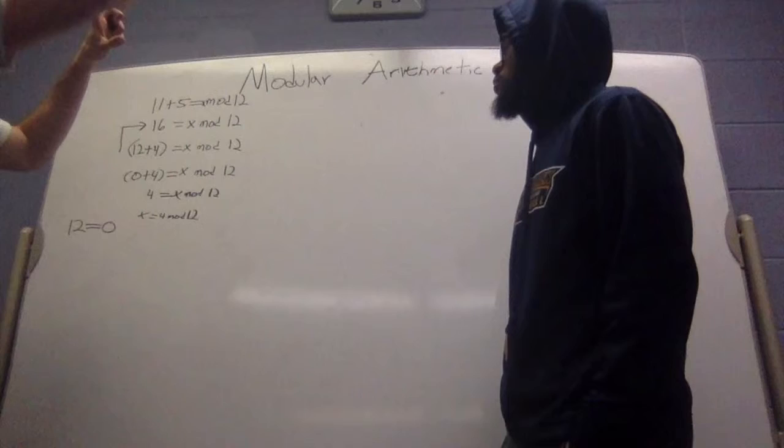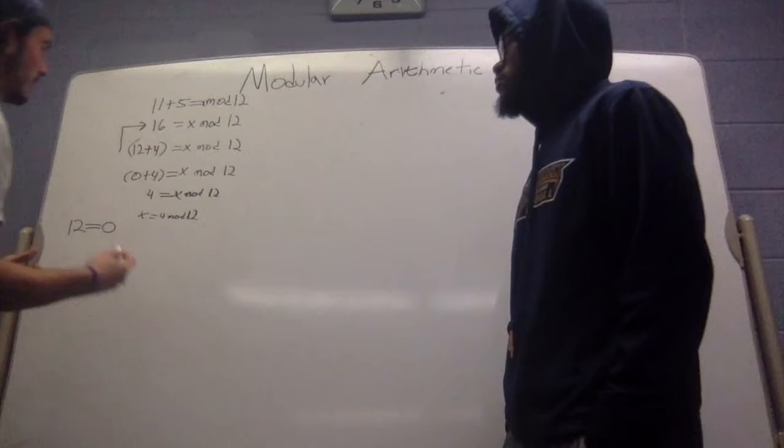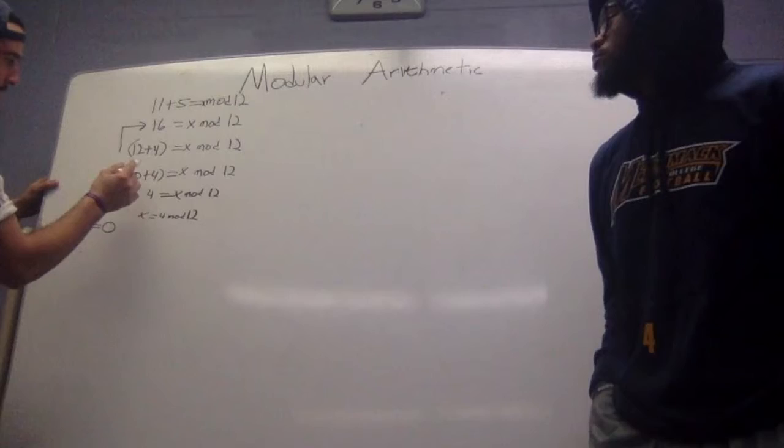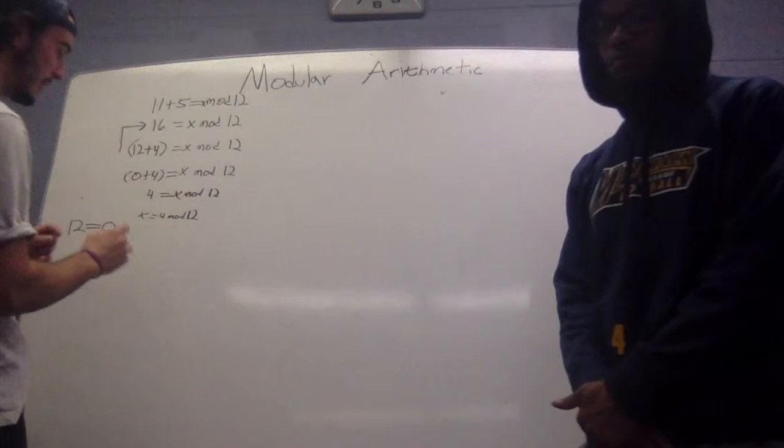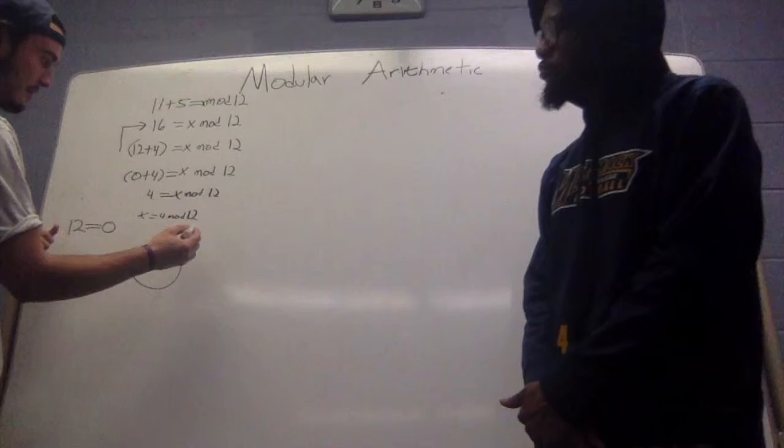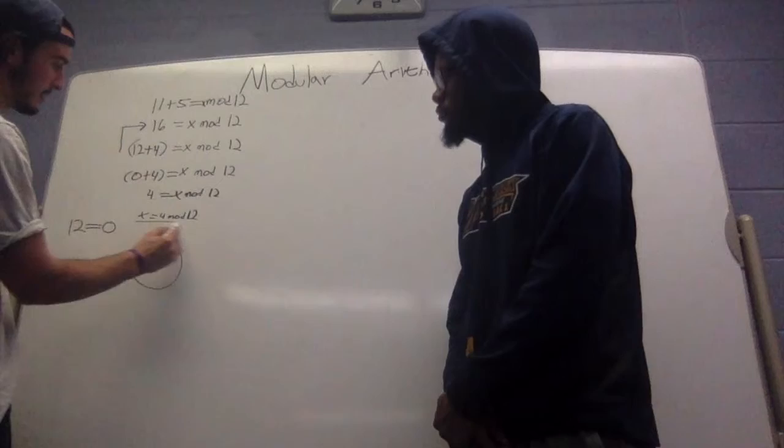Because once you reach the mod, you're going to wrap back around the numbers and restart your count. So by grouping these numbers into the terms of the mod, we can say that this 12 would equal 0, leaving us with 4. And since 4 is less than the mod, it fits inside the clock. So that means we have found our answer, and we just rewrite it in terms of x. And we get that x equals 4 mod 12.